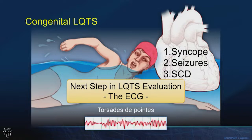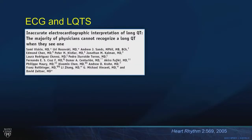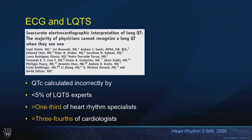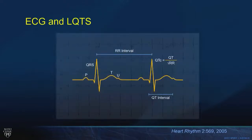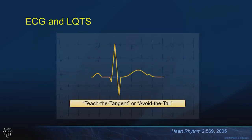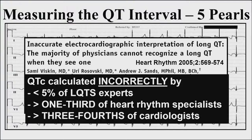The cornerstone of evaluation is the 12-lead ECG at rest, looking for abnormal QT prolongation. We need to confirm the QTc independently from the computer. Teach the tangent, avoid the tail — take the isoelectric segment, go down the downslope of the T-wave and intersect it there, resisting the sin of QT inflation from U-wave inclusion. Use lead II and V5 when confirming QTc — largely ignore V2 and V3. Compare your QT to the computer's QT.